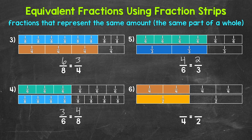Lastly, let's move on to number six. The top fraction strip has four equal parts and two are shaded in, so that fraction strip is showing two-fourths. That's going to be equivalent to how many halves? The bottom fraction strip has two equal parts and one is shaded in, so that is showing one-half. Two-fourths and one-half are equivalent fractions.